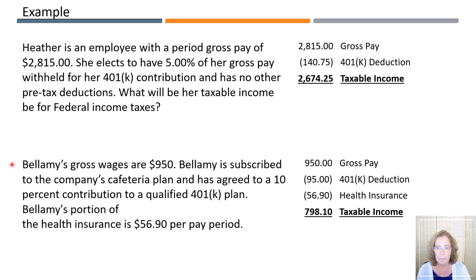Bellamy has gross wages of $950, has subscribed to the company cafeteria plan and has agreed to a 10% contribution of her gross wages in a qualified 401(k) plan. Bellamy's portion of the health insurance is $56.90. So first we'll write down the gross wages of $950 and calculate the 401(k) by multiplying $950 by 10%, which is $95. Write this amount down as a pre-tax deduction and enter the pre-tax deduction for the health insurance of $56.90, arriving at taxable income of $798.10.